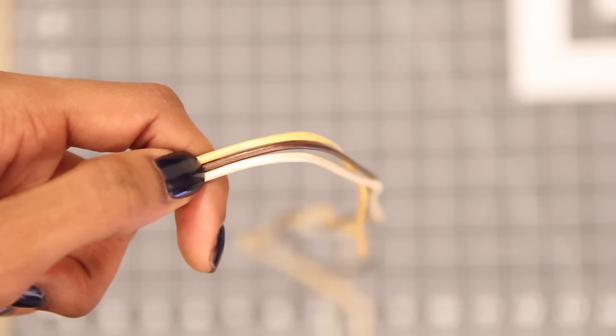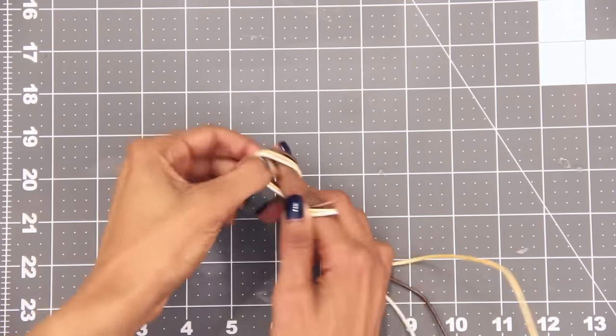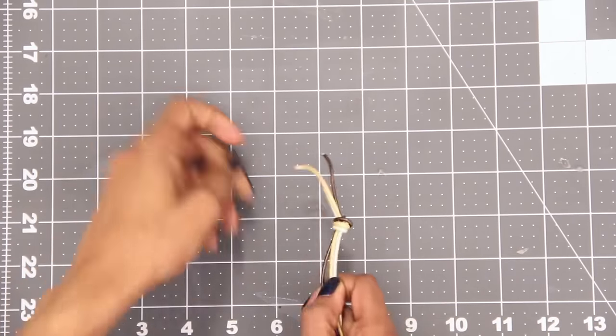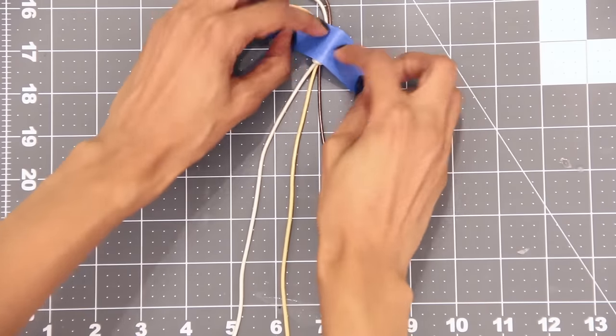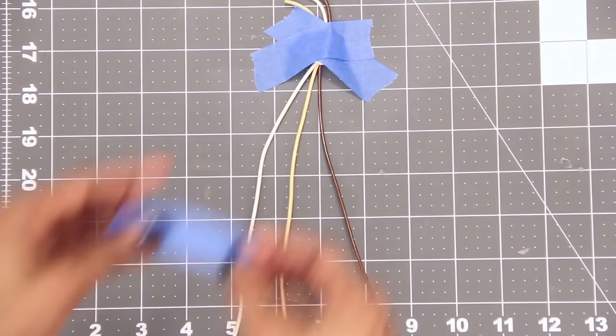If you're making a bracelet you'll need three strands of cord, and while I wouldn't normally use three different colors, it'll be much easier for you to see what I'm doing. Knot all three cords together and then secure them to any surface. I'm taping them down here but it's actually much easier to do this on a clipboard.